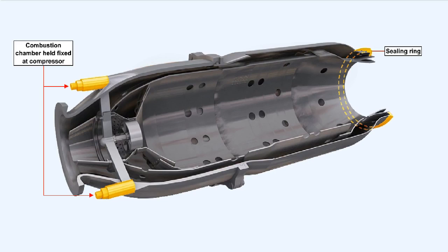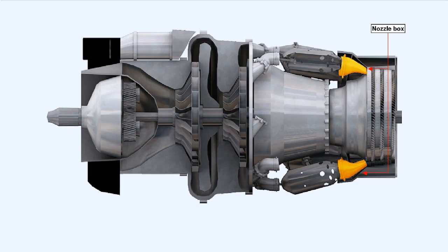The sealing ring at the turbine end of the combustion chamber allows for elongation of the chamber due to expansion. The chamber is fixed at the compressor end by being bolted onto it and it cannot expand in that direction. The sealing ring allows the chamber to expand into the nozzle box, which is the portion of the engine immediately preceding the nozzle guide vanes, while maintaining a gas-tight seal between the chamber and the atmosphere.